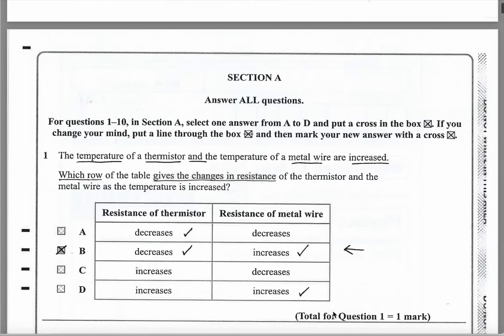The first question is temperature of a thermistor and the temperature of a metal wire are both increased. Which row gives the changes in resistance of the thermistor and the metal wire as the temperature is increased? If you increase temperature of a thermistor, the ones you normally use are negative temperature coefficient. That means as temperature increases, resistance decreases. So it's got to be A or B. For a wire, if you increase temperature, the resistance will increase. So it has to be B or D. Therefore, it has to be B.